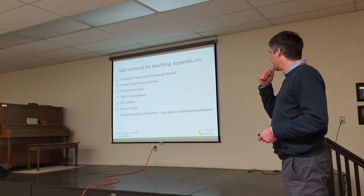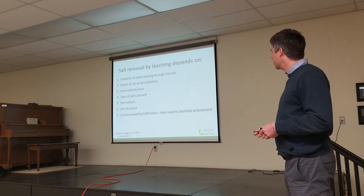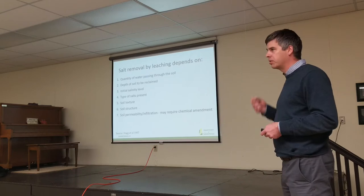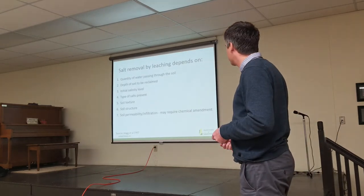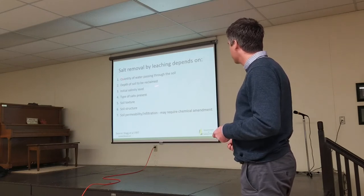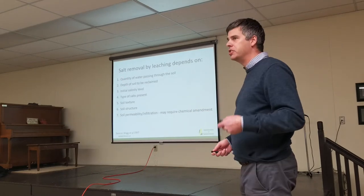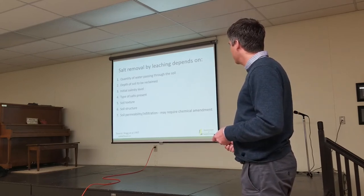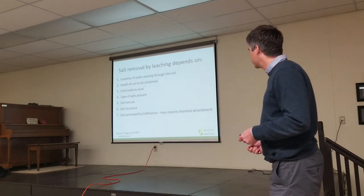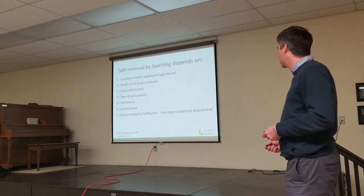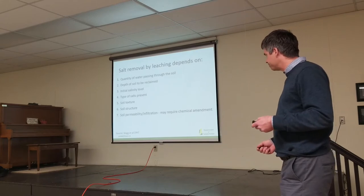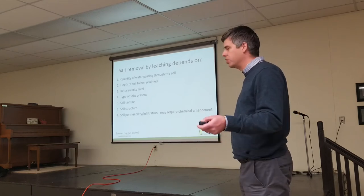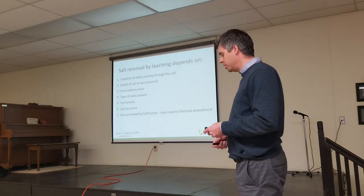Salt removal by leaching depends on several factors — this was pulled together by Terry Ha when he was at CSIDC. The key factors are: the quantity of water passing through the soil, the depth of soil to be reclaimed, initial salinity level of the soil, types of salts present, and soil texture, structure, and permeability or infiltration rates. Those last factors are all tied together — texture and structure both impact permeability and infiltration rates in the soil.